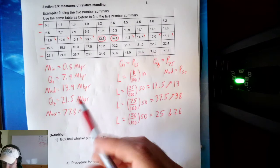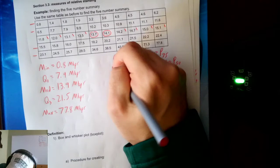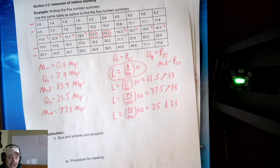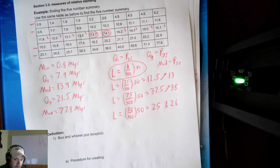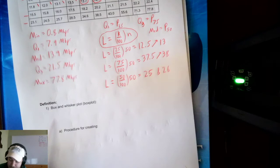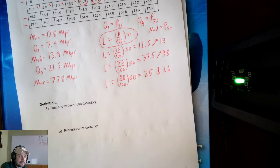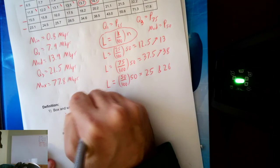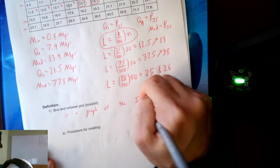Notice I used the locator a lot in this problem — make sure you're comfortable using the locator equation L equals K over 100 times N, because it tells you the locations of percentiles and quartiles. Now, we have one last topic: box and whisker plots, also called box plots. A box and whisker plot is a graph of the five number summary.